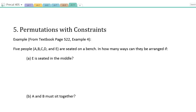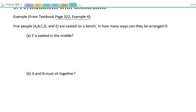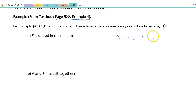Now, permutations with constraints. The textbook has the same example on page 522, example number four, with a more extended explanation. Here we have five people seated on a bench — in how many different ways can they be arranged? Without any constraint, there are 5 spots, and we can put 5 people in the first, then 4, then 3, then 2, then 1. That's 5 factorial — whenever you seat N people in a row, it's always N factorial.